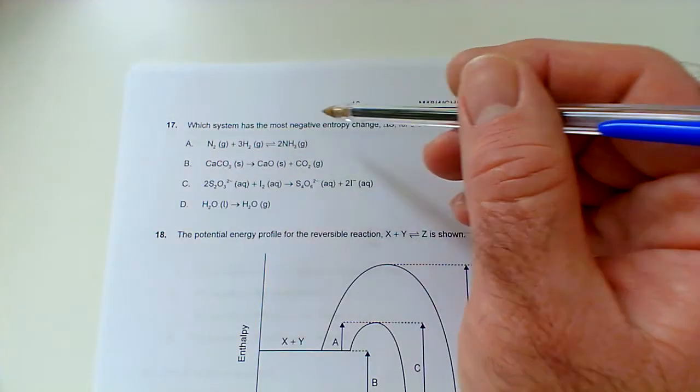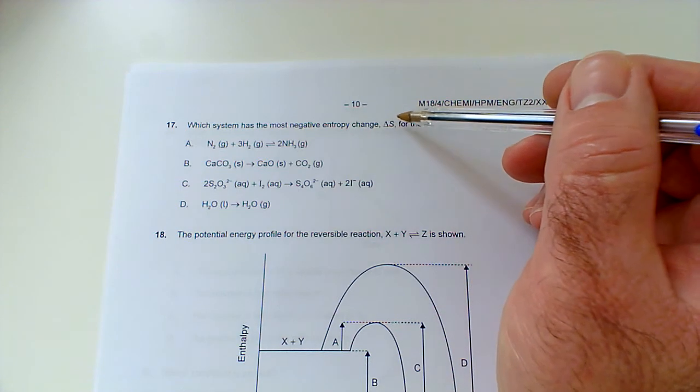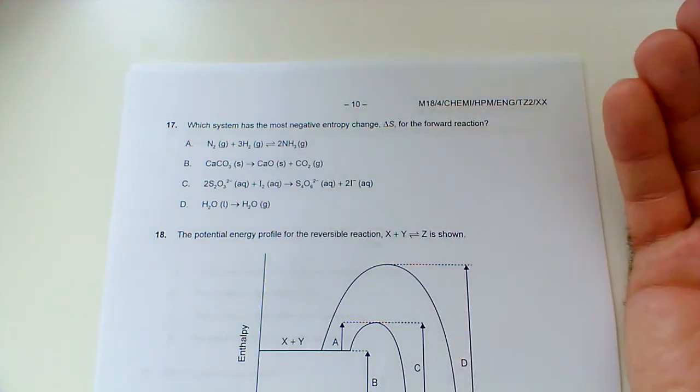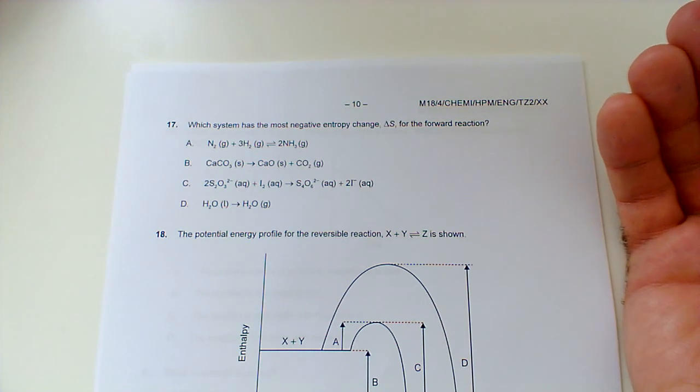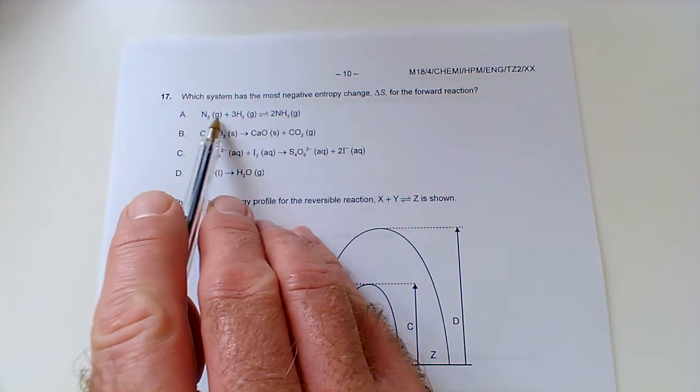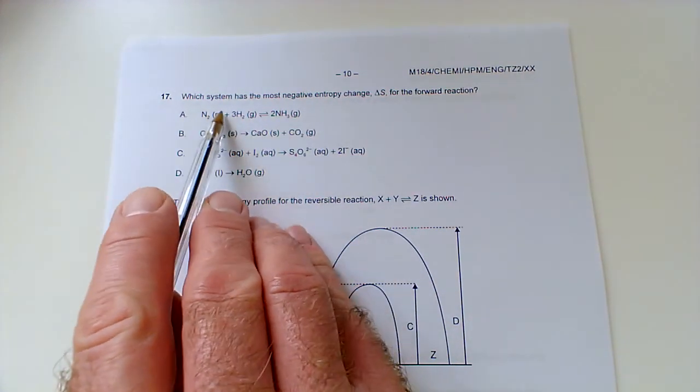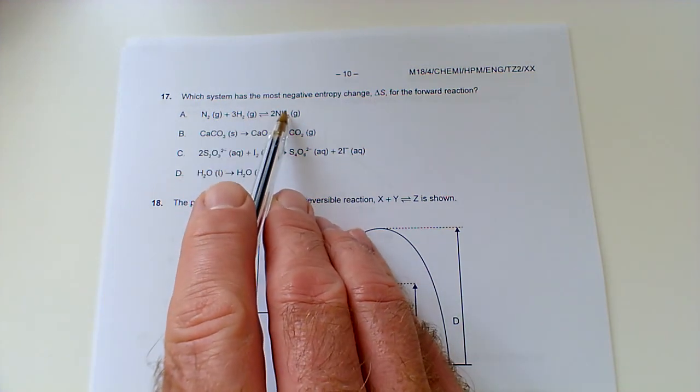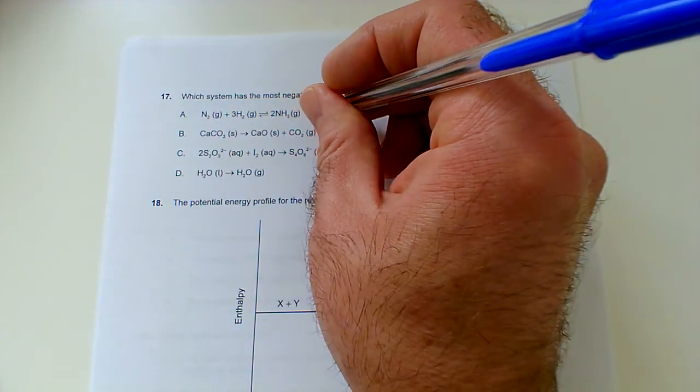Question 17: which system has the most negative entropy change delta S for the forward reaction? A negative entropy change signifies a system that is becoming more ordered rather than disordered. A positive entropy change would be a system becoming more disordered, which is where reactions tend to want to go. Nitrogen plus three hydrogens - we've got four molecules of gas becoming two molecules of gas, so this system is becoming more ordered. That would be a negative entropy change, so that's looking like a good possibility.